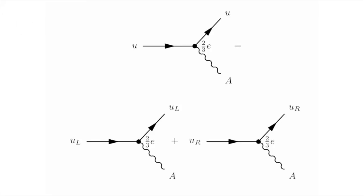Now breaking that up into the left and the right-hand components of the up quark, there are two diagrams which are just added. The left-handed up quark interacts with the photon, and the right-handed up quark interacts with the photon. In both cases, the strength of the interaction is two-thirds times the electric charge E.